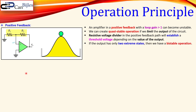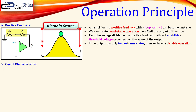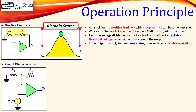Now if the output has only two extreme states, as said, then we have a bi-stable operation — those are the two stable states. Now the circuit characteristics for the inverting Schmitt Trigger: you see here the input voltage going into the inverting node, and we will always have a feedback to the positive or the non-inverting input of our operational amplifier.